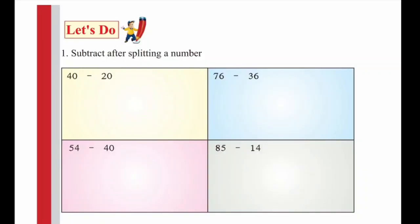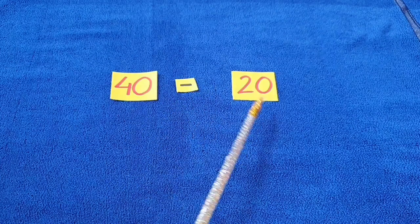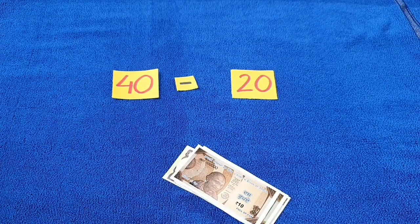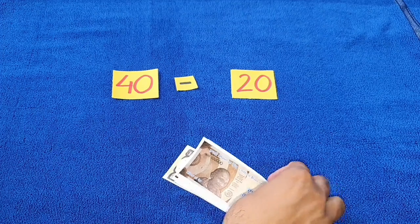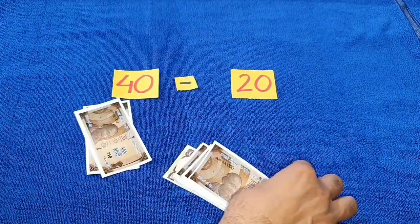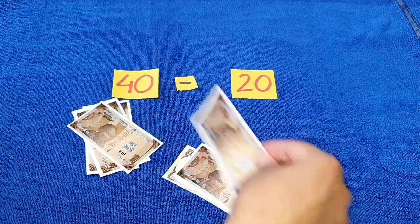Now, from page 63, we will do question number 1. Subtract after splitting a number. First part is 40 minus 20. Let's use some currency notes here. For 40, we have 10, 20, 30, 40.